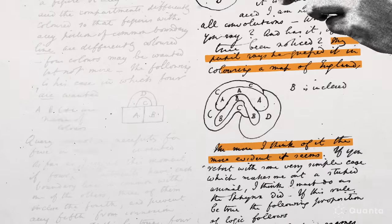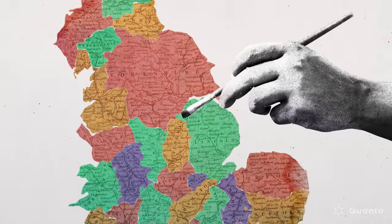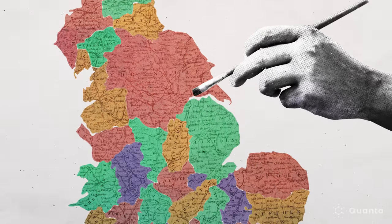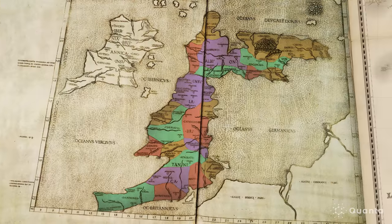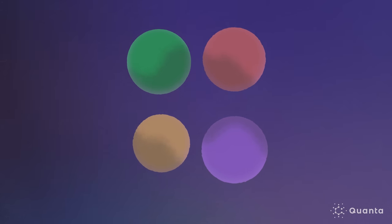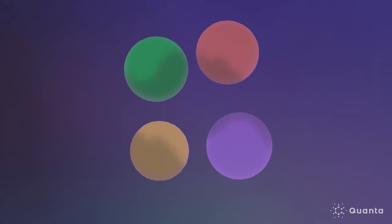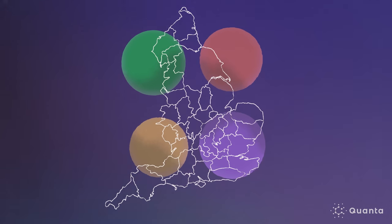Guthrie had discovered that he could shade in all the counties in the United Kingdom with only four colors. He wondered if this was the case for all maps regardless of the shape, size, and complexity.